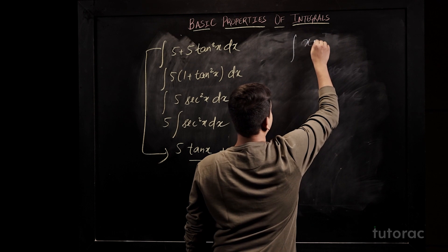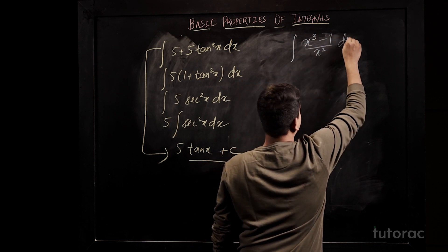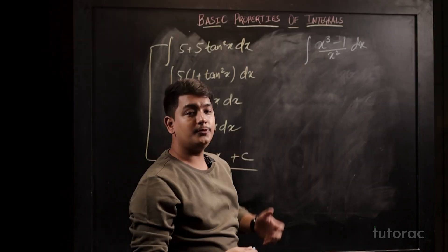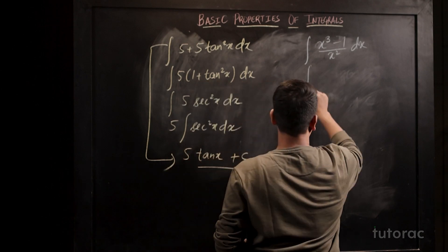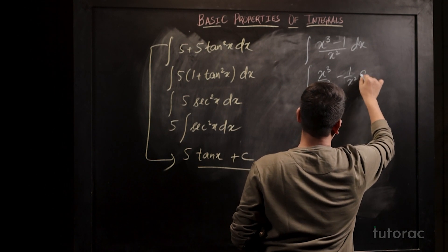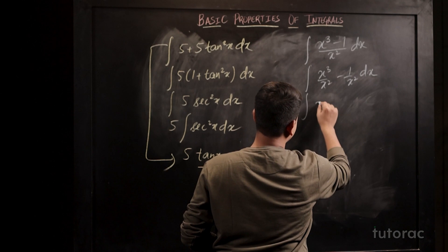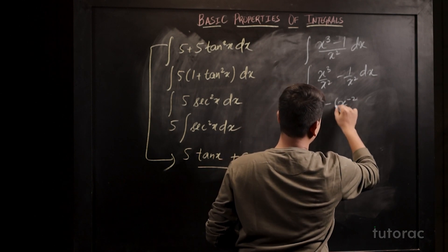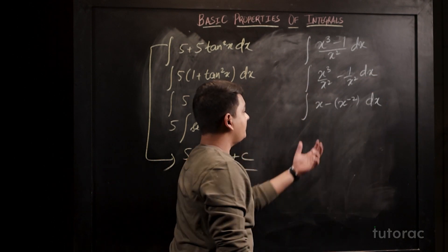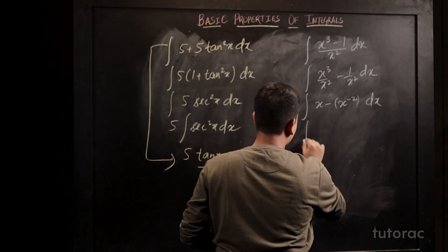Moving to the next example, suppose the function is (x³ - 1) / x² dx. We can separate the numerator to get x³/x² - 1/x² dx, which simplifies to x - x⁻² dx. Since these two functions are being subtracted, we can split the integral over each.